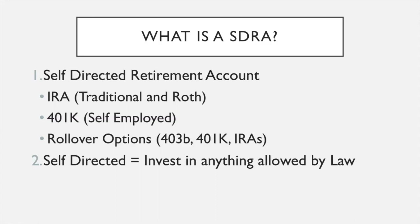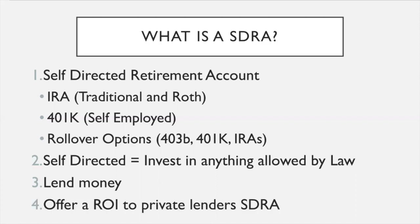At the current time of this recording, the things to stay away from would be collectibles — so you can't invest in wine, old wines, or paintings and some of the other collectible items. You can lend money out of your self-directed IRA and offer a return on the investment to private lenders. I'm going to give you examples of how to use this for yourself and how to use other people's retirement accounts to invest in real estate.